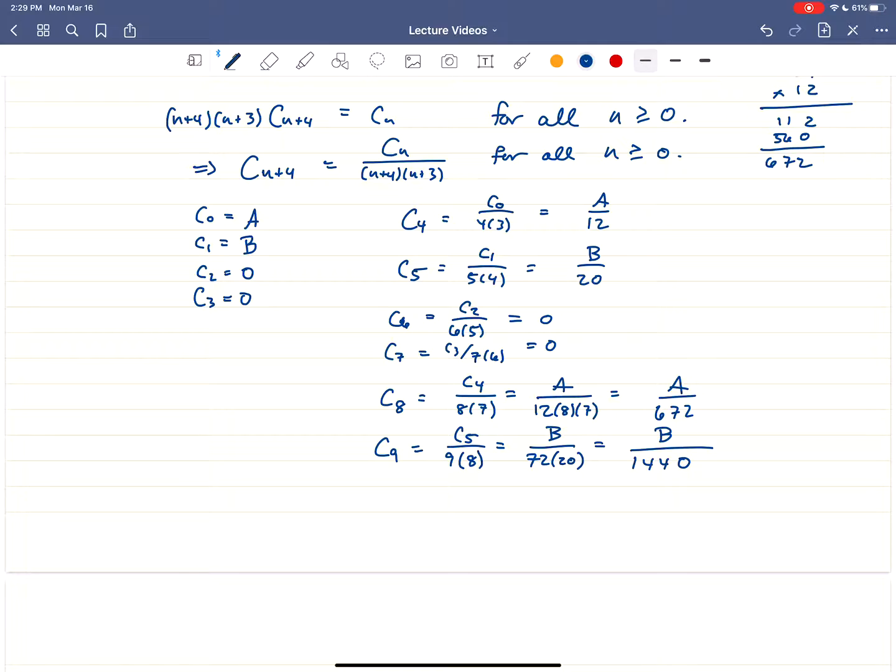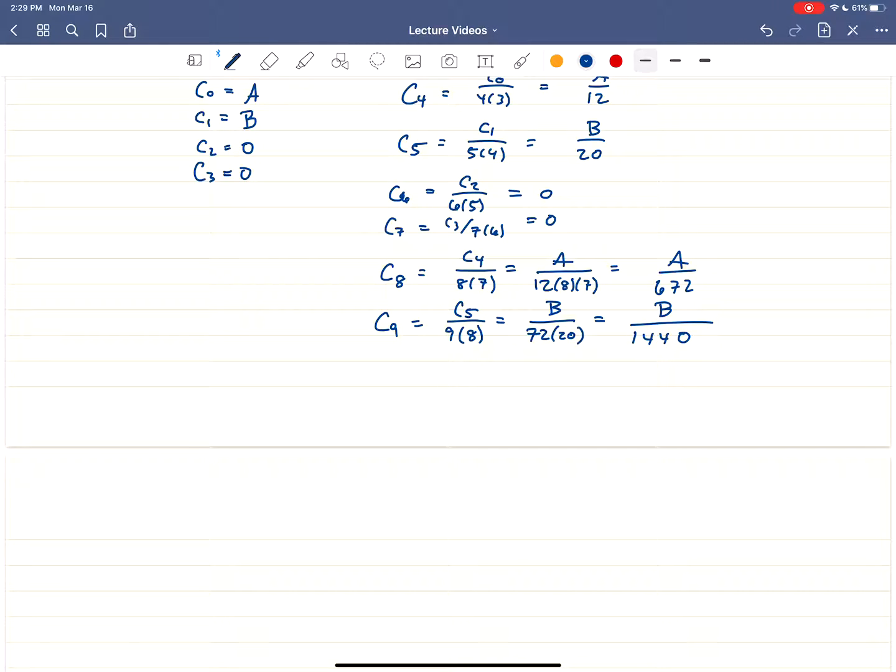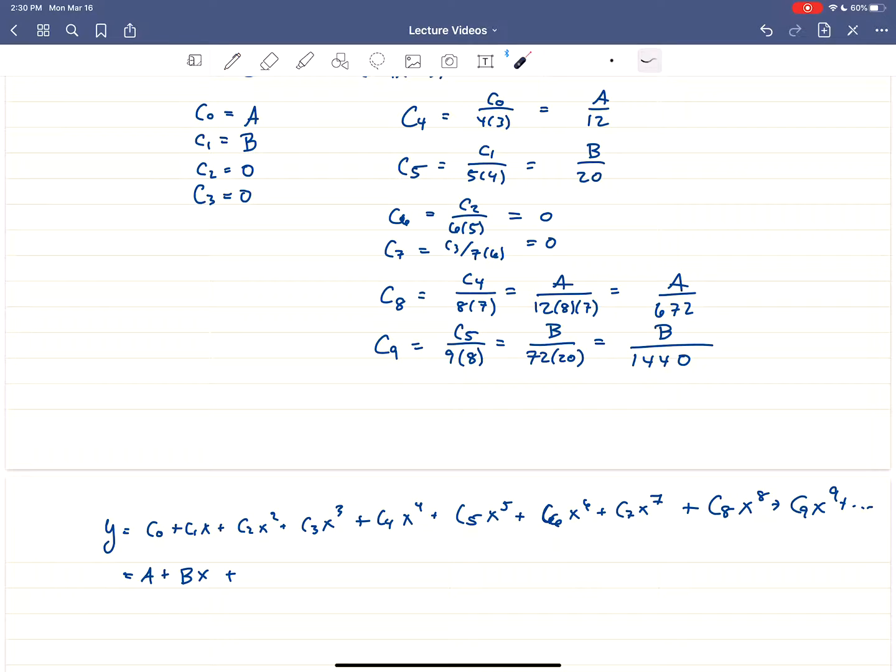Finally, we're going to put everything together. And there's no formula to speak of for c sub n. There's not going to be. So I'm not going to bother to look for one. What we're going to get is that y, which is c₀ plus c₁x plus c₂x squared. I'm going to actually write up to the x to the 9th term just to emphasize what's going on. So this is c₄x to the 4th, c₅x to the 5th, c₆x to the 6th, c₇x to the 7th, c₈x to the 8th, and c₉x to the 9th plus infinitely more terms. So I'm just writing out the first ones. And this is going to give us A plus Bx plus the c₂ is 0, c₃ is 0.